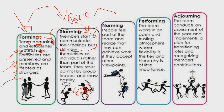The third stage is Norming — a very important stage for a team's growth. People feel part of the team and realize they can achieve work if they accept others' viewpoints. By around the fourth week of your new class, there is acceptance between members — they get along nicely, become friends, and realize they are part of the team working towards a shared goal.